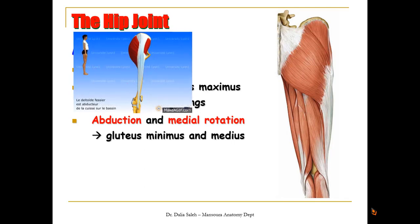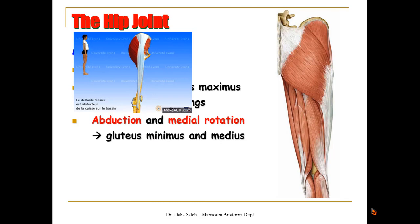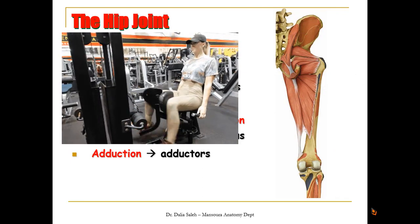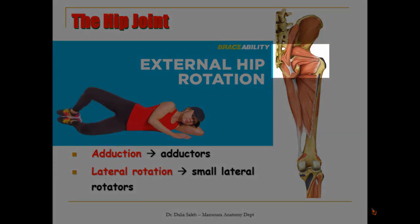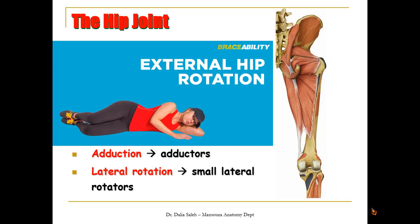Abduction and medial rotation of the hip joint are performed by gluteus medius and minimus, assisted by the tensor fasciae latae — all supplied by the superior gluteal nerve. Remember that gluteus medius and minimus prevent pelvic tilt during walking. The tensor fasciae latae together with the gluteus maximus, since they insert into the iliotibial tract, also help in extension of the knee joint. Adduction of the hip joint is performed by the adductors of the medial compartment of the thigh, supplied by branches from the obturator nerve. For lateral rotation, the small lateral rotators — piriformis, obturator internus, the two gemelli, and quadratus femoris — are supplied by branches from the sacral plexus and also help stabilize the hip joint.